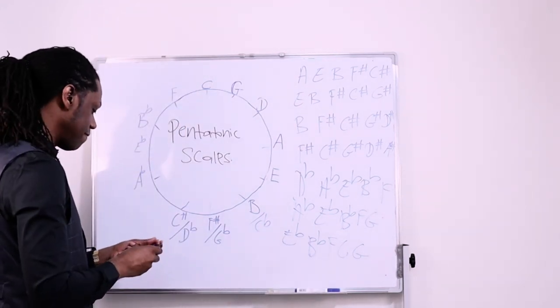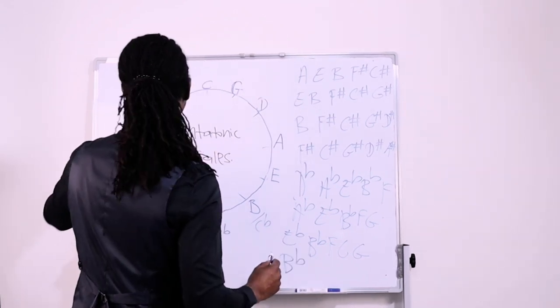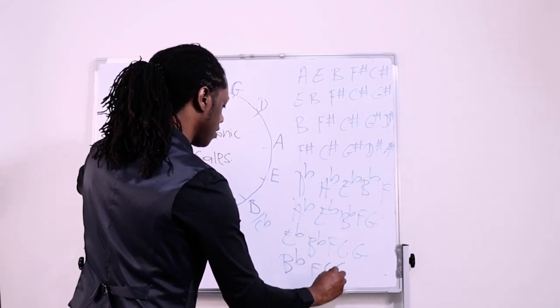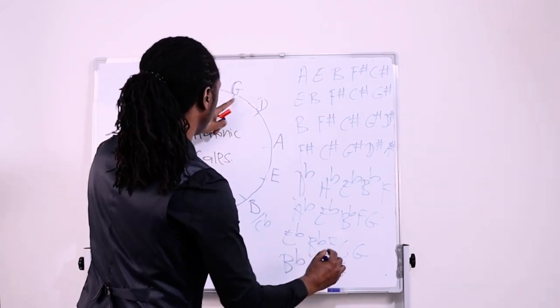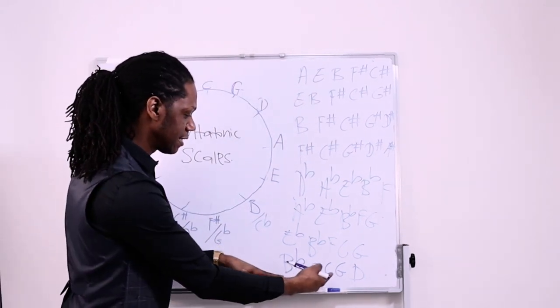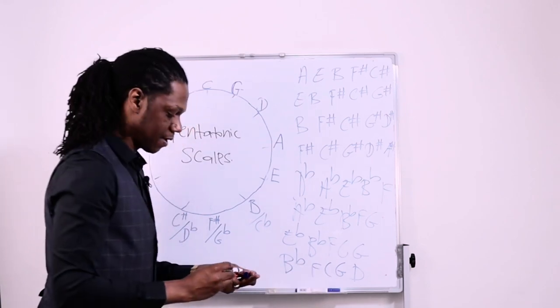How about B flat? Of course. B flat. One, two, three, four, five. Okay, B flat, F, C, G, and D. And if you reorganize it, it would be B flat, C, D, F, and G. Okay?